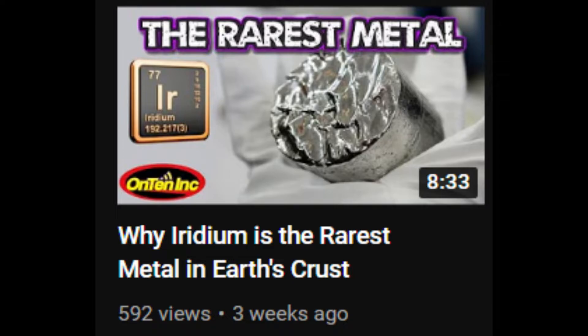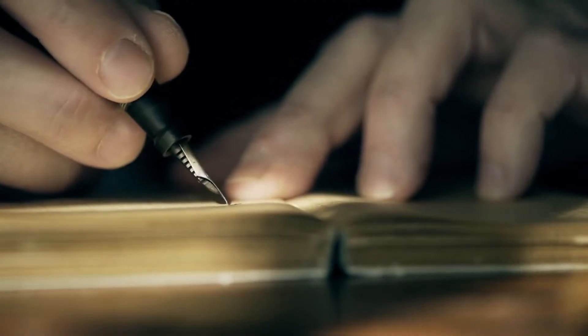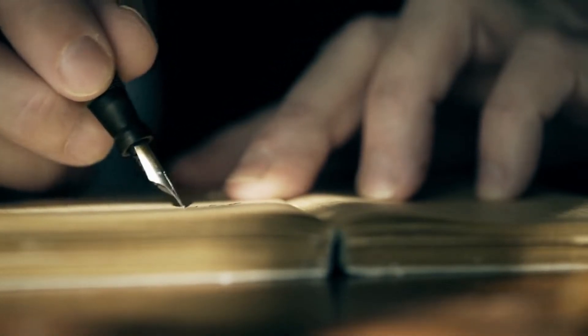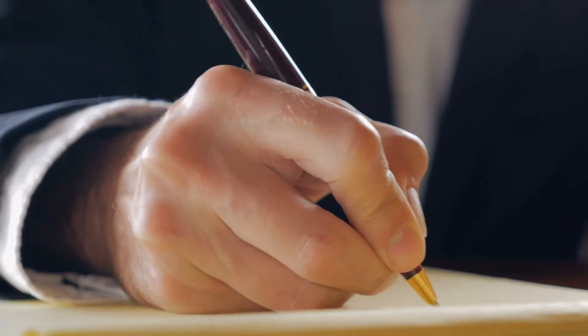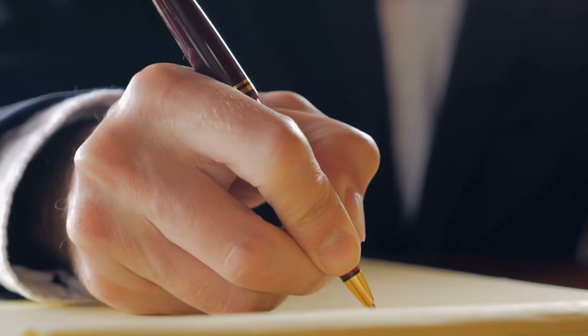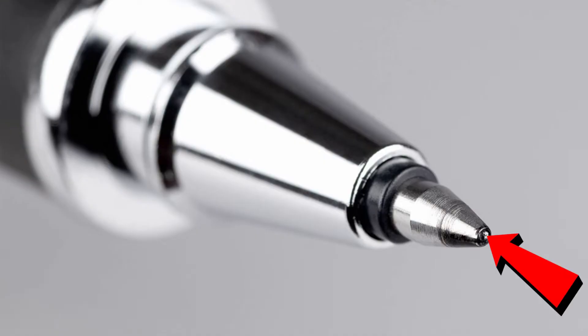In our clip about Iridium, we said that tip of fountain pens are made from Iridium. But tungsten are used in pens also, and they're in the tip of the most used pens in the world. If you didn't know, the ball inside of a ballpoint pen is made from tungsten.